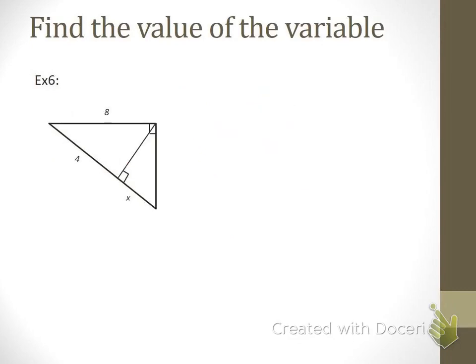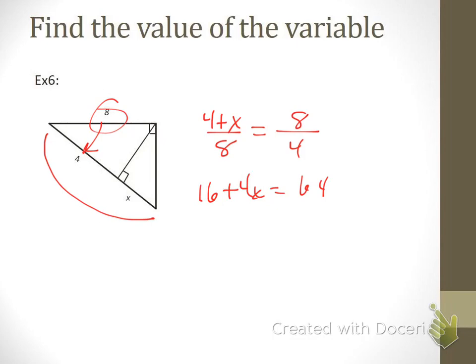So there you go. Stop the video, try this one, start it back up, and see if you get it right. Okay, so the altitude's not involved in this one, but this leg is. So we want to do the leg proportion, leg goes in the up diagonal, and we need the whole hypotenuse, which has to be the 4 plus x, and then the adjacent piece, which is just that 4. Now we can cross multiply and make sure you distribute that 4 to the x and the 4. Subtract 16, divide by 4, and so x is 12.